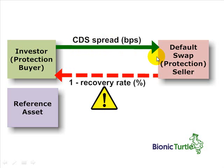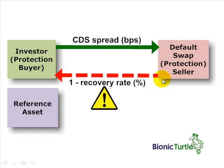If there is no triggering credit event, that may be all that happens — this investor has simply paid premiums to the swap seller, nothing bad happened to the reference asset, and that's the end of the story. On the other hand, the investor is paying these premiums on a contingent event such that if there is a credit event according to the terms of the contract, then the seller is obligated to compensate the buyer. This seller has essentially purchased the credit risk on the reference asset.